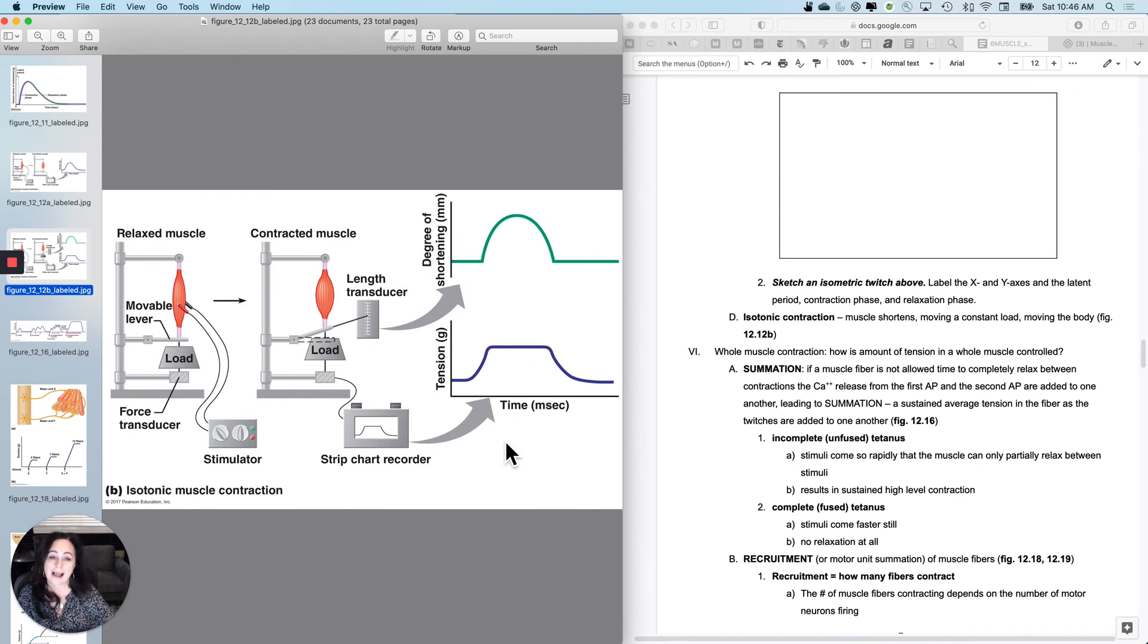So why is this called an isotonic contraction? Because once I get enough tension or tone, tonic, I can stop generating tension, right? So, and then I can use it for shortening. So what's going to happen is initially, I'm not going to be wiggling because I haven't generated enough tension. And then I do wiggle. So this is called an isotonic contraction. And this is what we normally think of as muscle contractions.